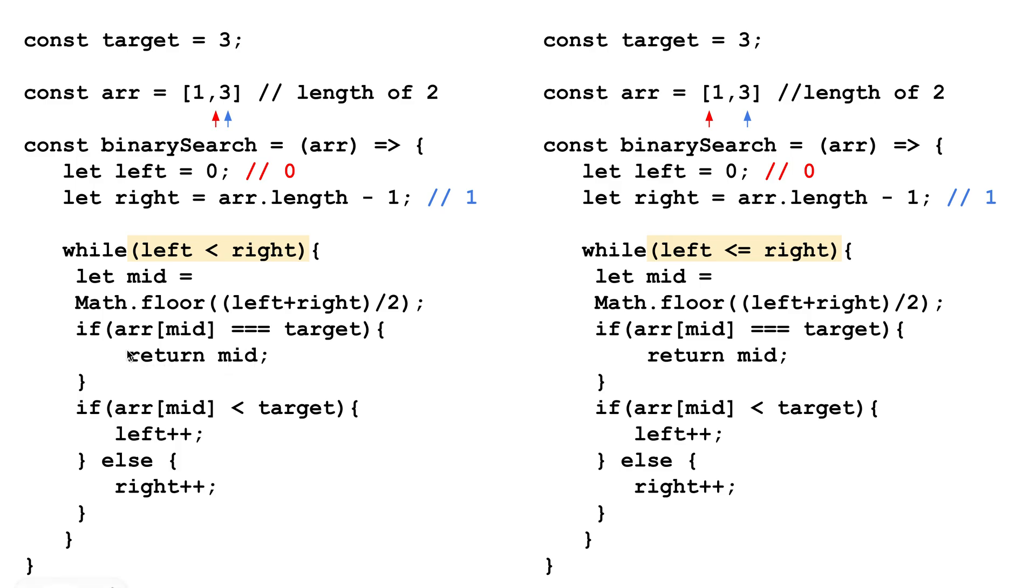Now if we looked on the right hand side with the less than equal sign, we'll do a similar approach, but at the point where left and right are equal, we go into the loop again, looking for whether or not our value is equal to the target, in which case we can return the index. So that extra iteration into the loop due to the less than or equal sign allows us to return the value that we're searching for.